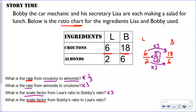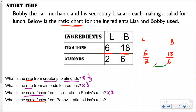Going back to Lisa's and Bobby's ratio, this looks like something we did with fractions. If my scale factor between Lisa and Bobby's ratio is times three, that means the denominator will also be times three — kind of like multiplying by the big one. It's easier to see the scale factor when written like a fraction. Whatever your scale factor is, it has to work for both numbers in the ratio — both croutons and almonds.